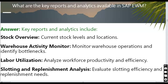What are the key reports and analytics available in SAP EWM? Key reports and analytics include stock overviews for tracking stock levels and locations, the warehouse activity monitor to identify bottlenecks, labor utilization reports to analyze productivity and efficiency, and slotting and replenishment analysis to evaluate slotting efficiency and replenishment needs.